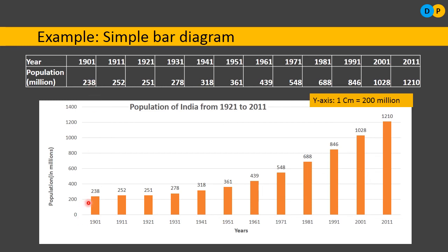In one-dimensional diagrams, we consider only one dimension — the y-axis. Here all bars are erected considering only the y-axis. The x-axis represents the years 1901, 1911, 1921, 1931, and so on, but they do not have the greatest significance here. The y-axis — which shows population in millions — is the key dimension. The scale is considered depending on the highest magnitude, which here is 1210. So if I want to represent 1210 on my sheet of paper, I set 1 centimeter equal to 200 millions.